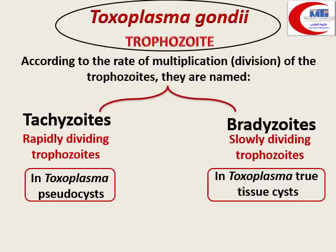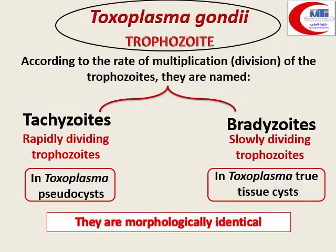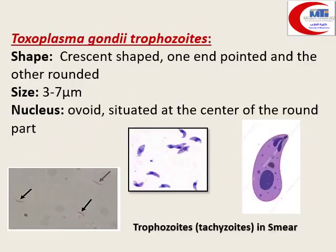From a practical point of view, tachyzoites and bradyzoites are morphologically identical. When examining a patient sample, we expect to find trophozoites or tissue cysts. The oocyst will never be found in humans — it is only present in the definitive host, the cat.